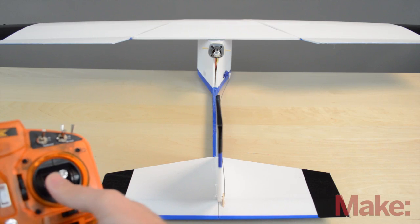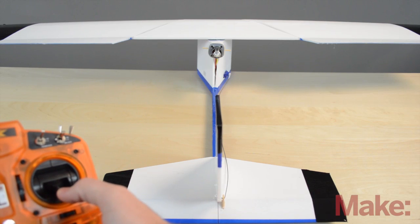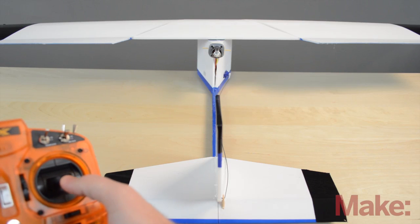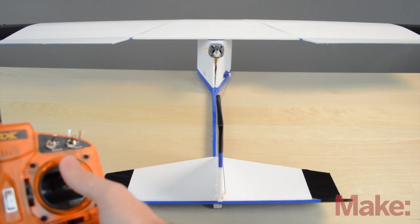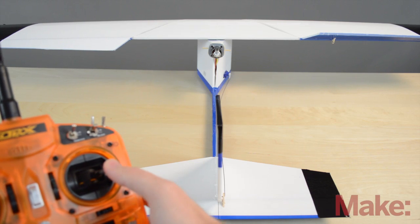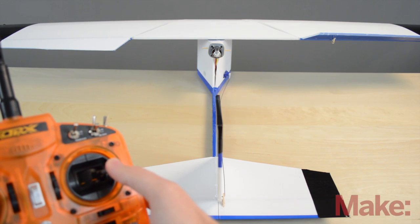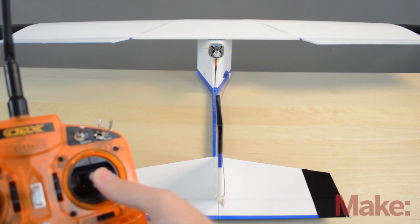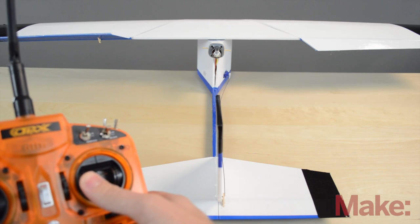For the elevator, when you push it down on the stick, it should go up. Obviously we're reversed right now, so when I push it up it goes up, this is not the right way. And then the ailerons, when I push to this side, that side should come up, the one that I'm pointing to, so that's right. And then the same with the other side, it should go to where I'm pointing.